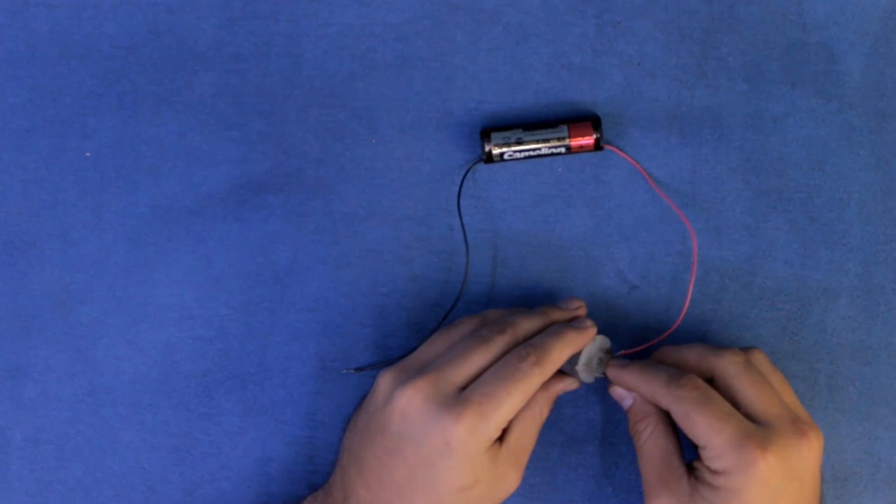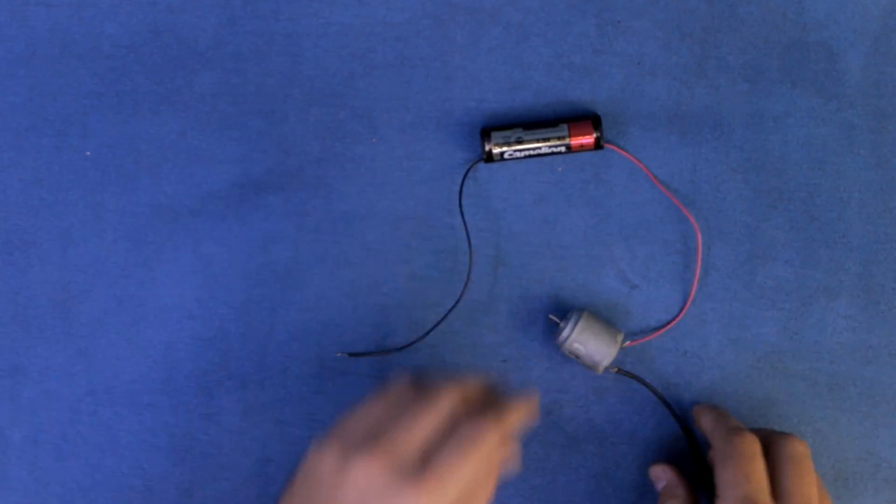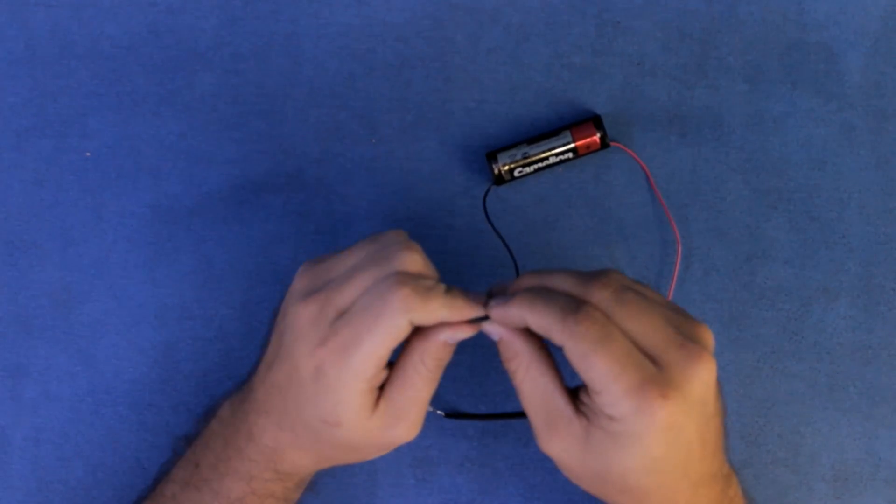Attach the tilt switch to your motor as well, then complete the circuit by attaching the other end of your tilt switch to the battery clip.